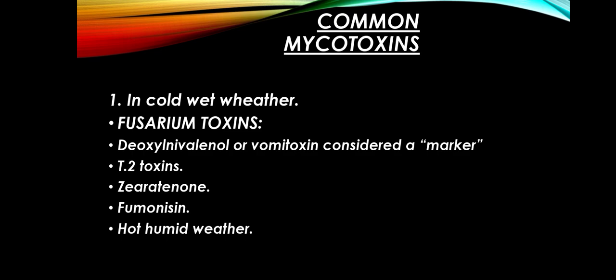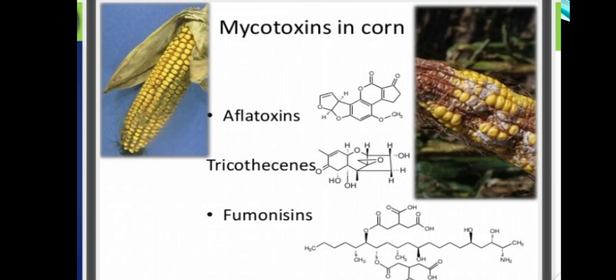Common mycotoxins fall into two categories. Number 1 — in cold, wet weather: Fusarium toxin, Deoxynivalenol or Vomitoxin (considered a marker), T-2 toxin, Zearalenone, and Fumonisin. Number 2 — in hot, humid weather. Here are pictures of mycotoxins in corn, showing the structures of Aflatoxin, Trichothecene, and Fumonisin, along with diagrams of Aspergillus, Penicillium, Stachybotrys, and Fusarium.